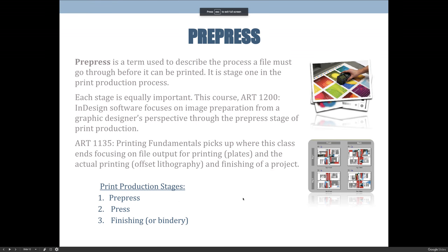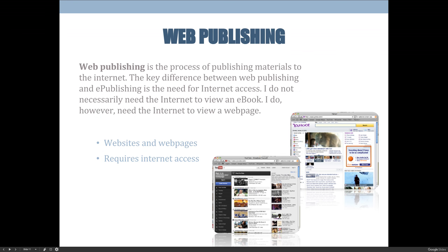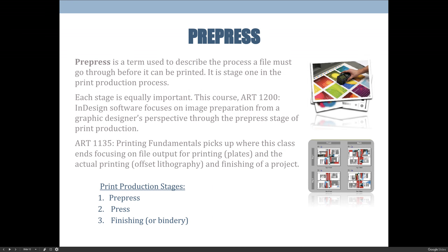We're going to take a jump backwards. Instead of talking about those four types of publishing mentioned in the previous video, we're going to focus just on electronic publishing, which is the preparation of graphic material for a printed output using computers, as opposed to using film or traditional analog processes.